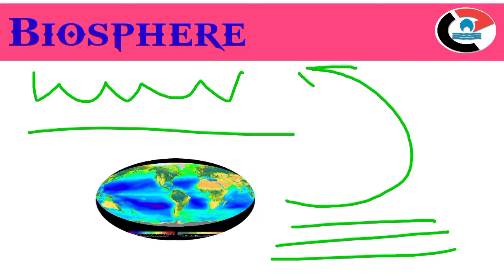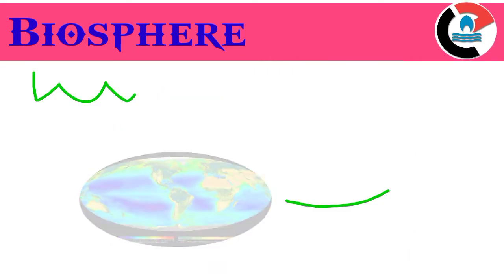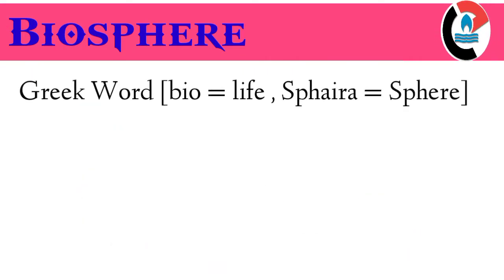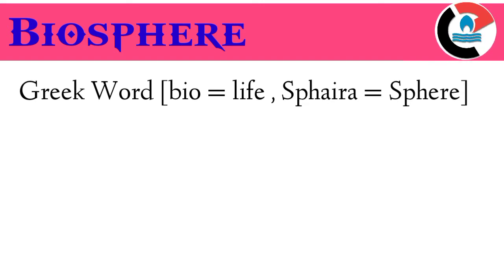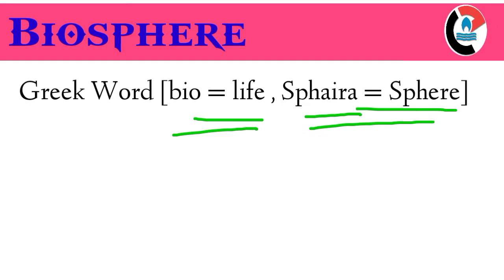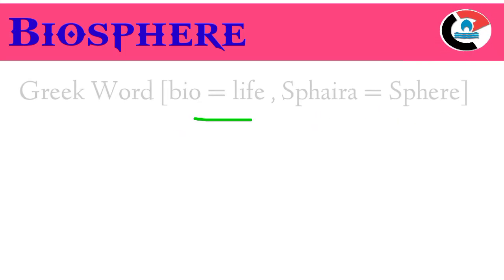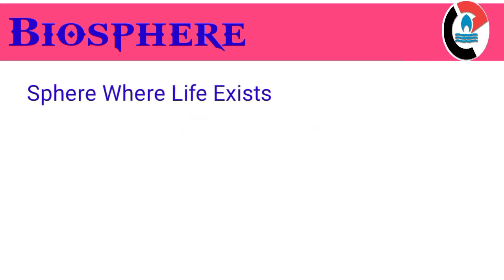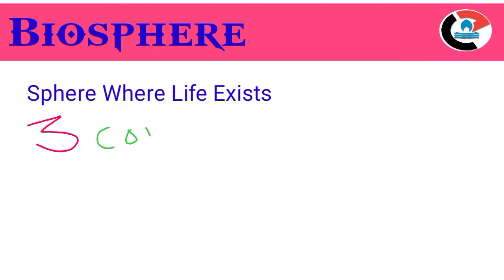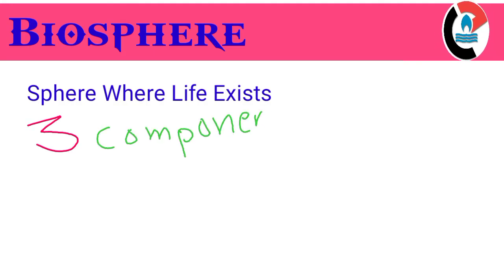The word biosphere comes from Greek. It is a combination of two words: 'bio,' which means life, and 'spara,' which means sphere. So, biosphere is the sphere where life exists. It consists of three components.